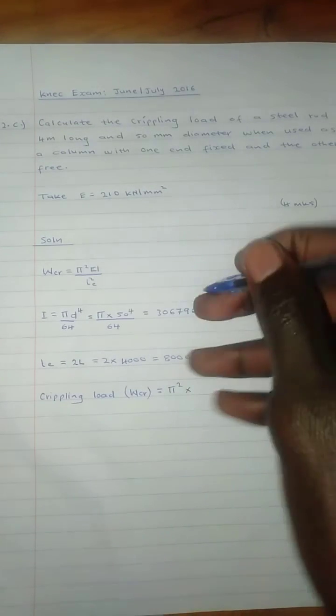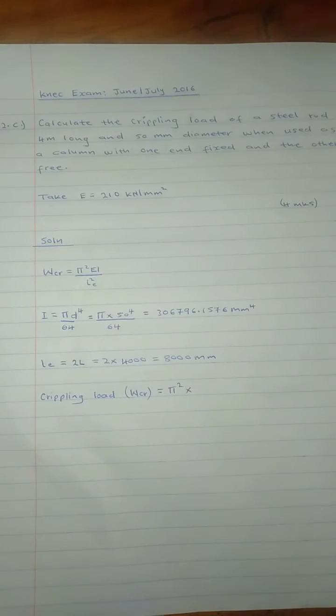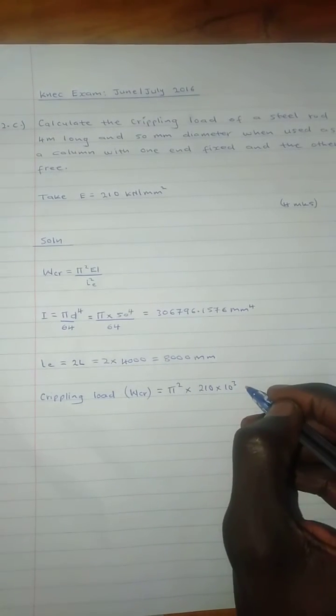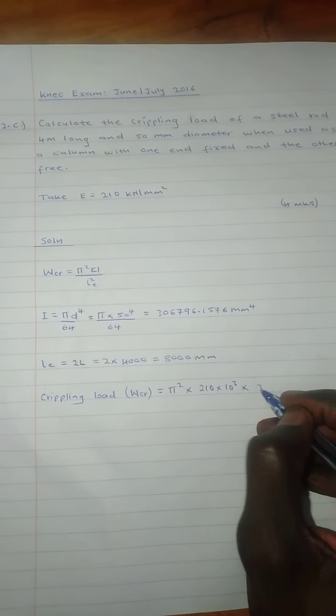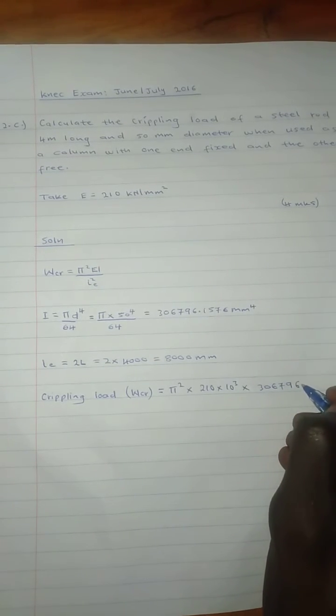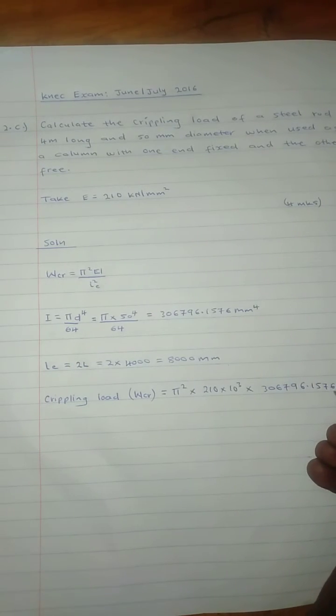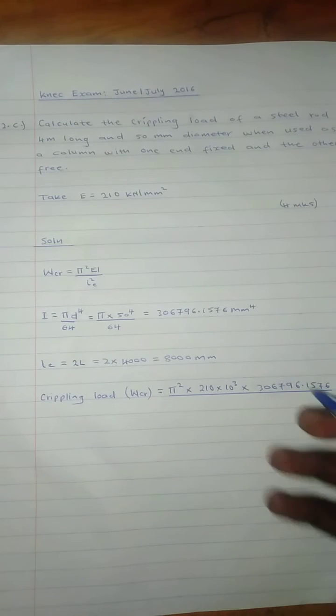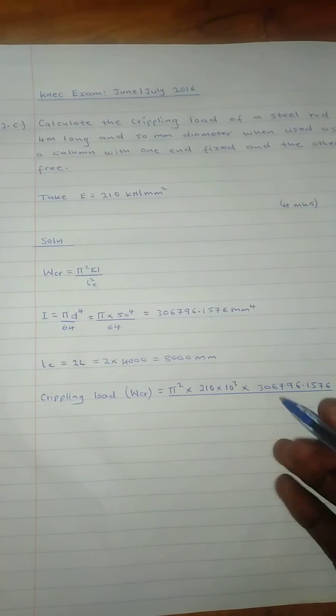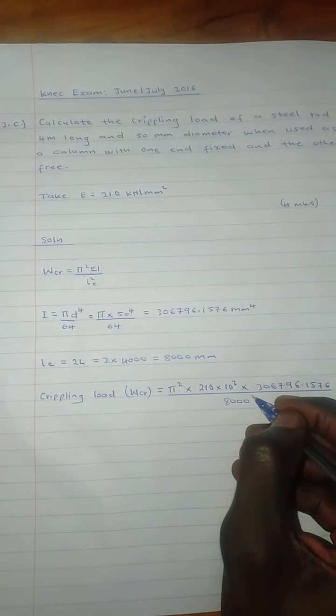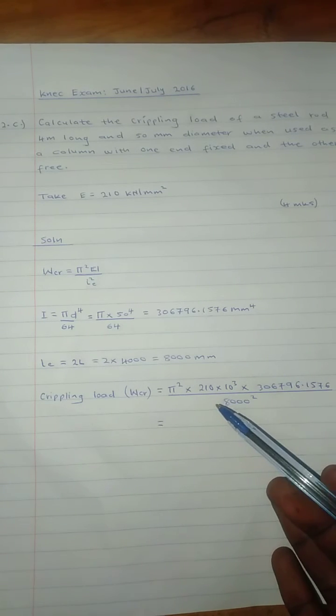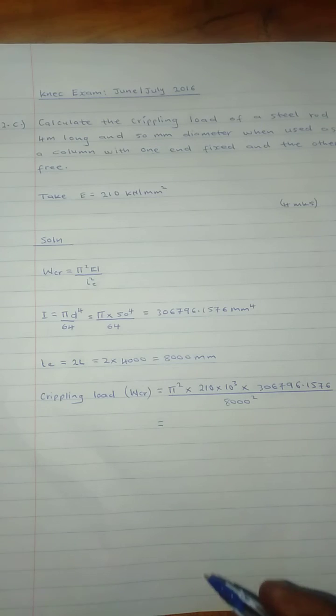Let's get the crippling load. We'll change the Young's modulus into newtons per millimeter squared, so we'll times it by a thousand. I don't have a ruler, let me just improvise by using a pen. We'll divide all this by effective length squared. When you punch this into the calculator, you will get the crippling load is 9,935 newtons.